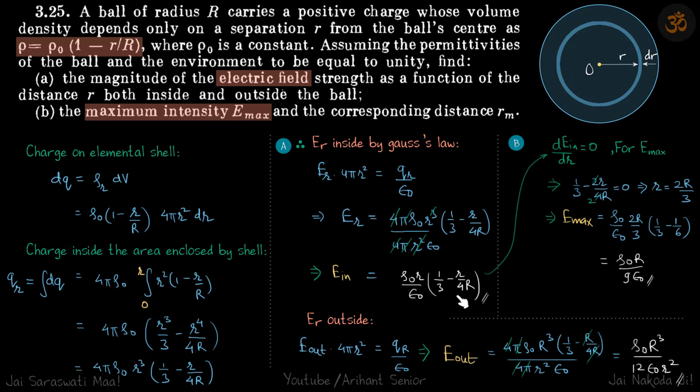So we will take this E in and differentiate it with respect to r. And if you do that, you will find that at r is equal to 2R by 3, we get our E max because this term becomes 0.